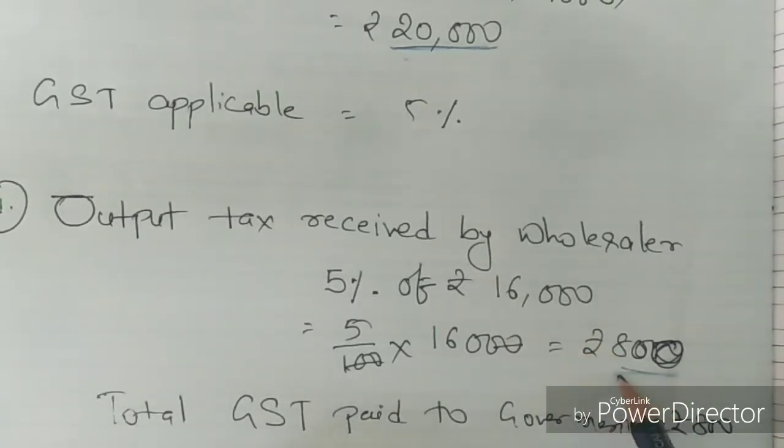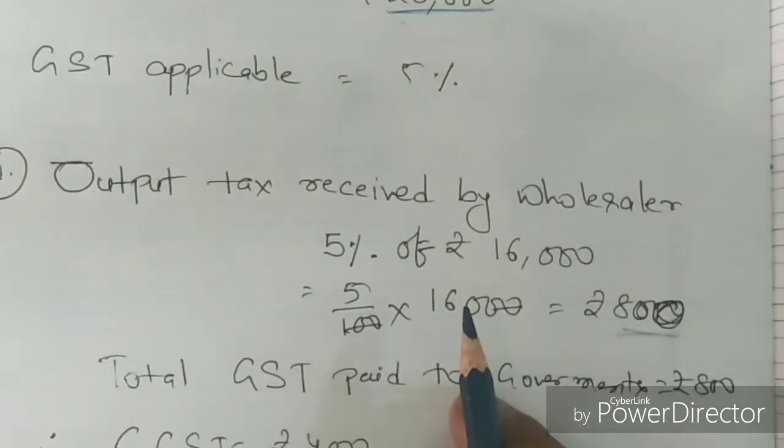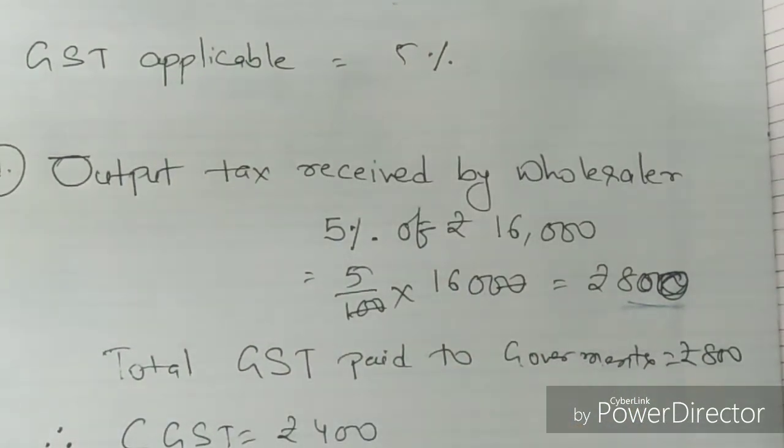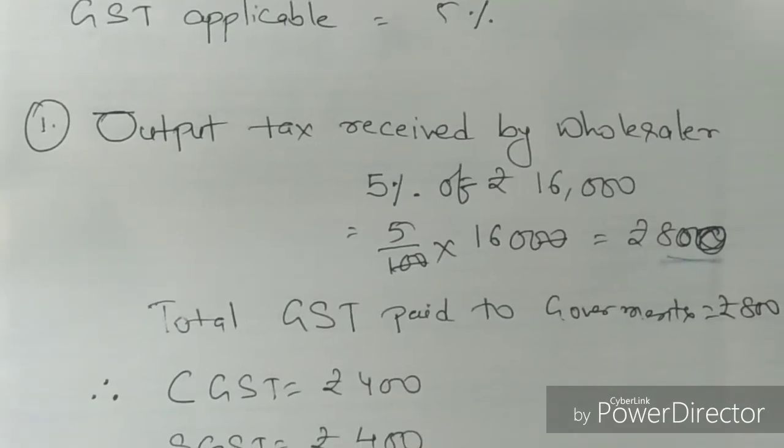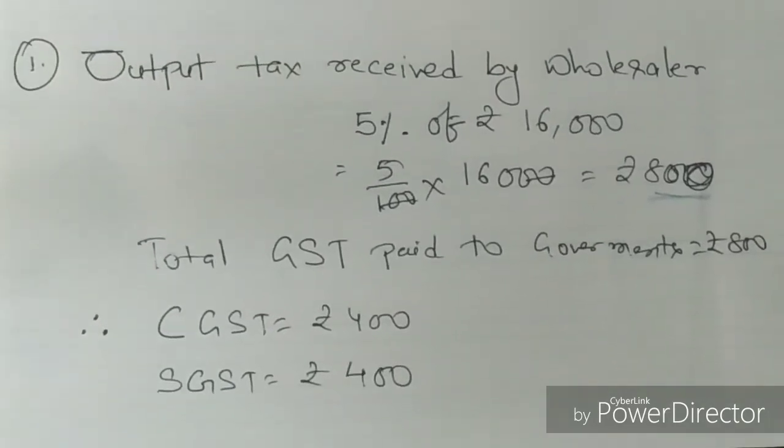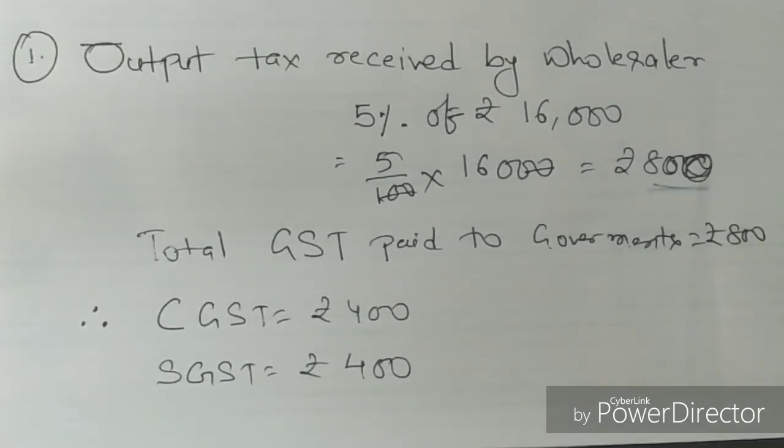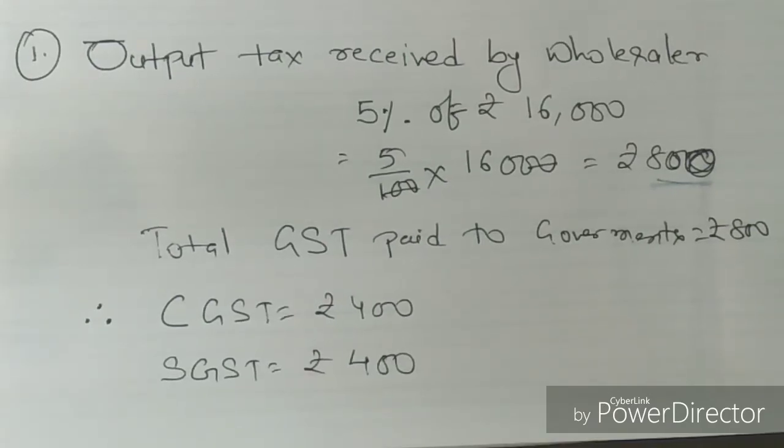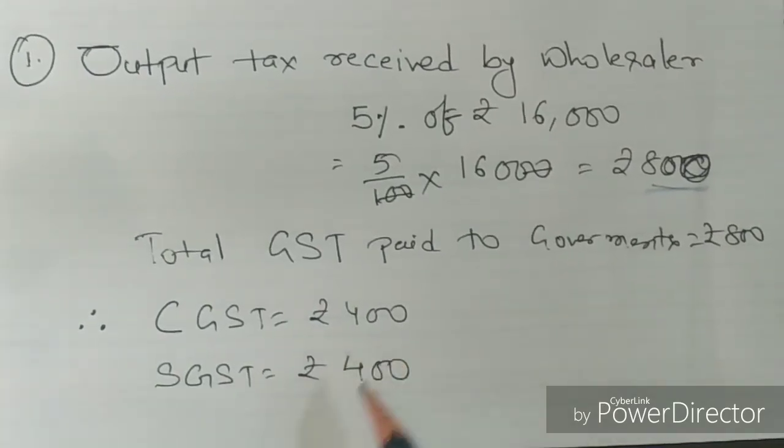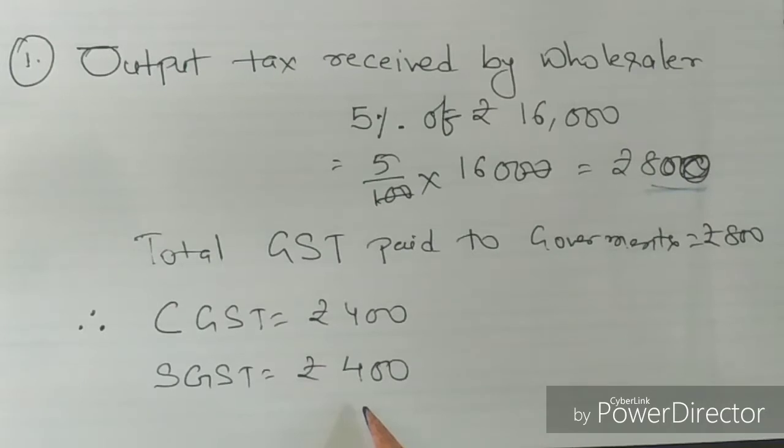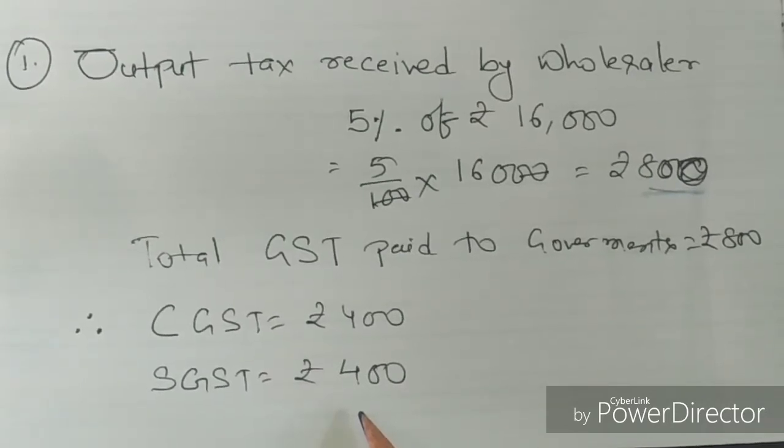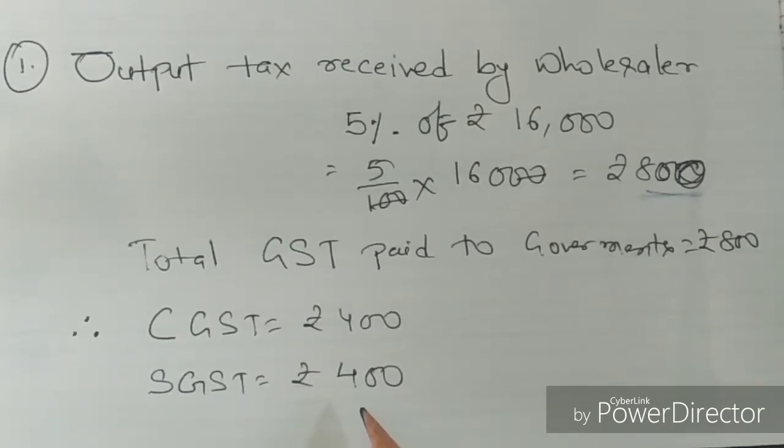This total tax will be divided into two parts. As we know, one will be CGST and the other will be SGST. So CGST will be Rs 400 and SGST will be Rs 400.